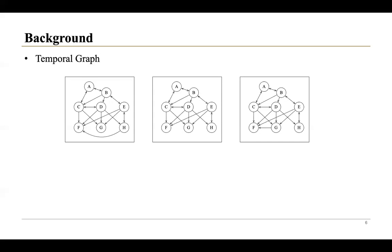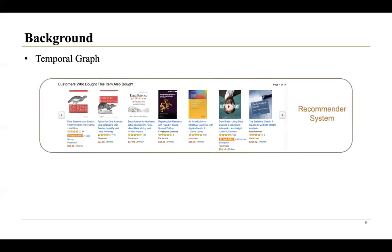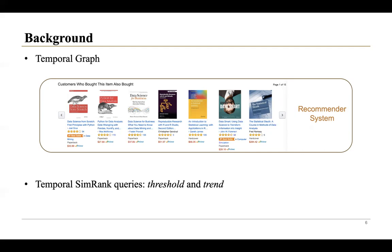It is very important to define SimRank queries in temporal graphs. For example, in product recommender systems, items purchased by you might be recommended to other similar users. However, users' interests may change frequently. If we define a group of users where the similarities between this user and you are greater than a threshold continuously for a period of time, the items recommended for such a similar group will be more appropriate. At the same time, the similarity trend between users is also an important property.